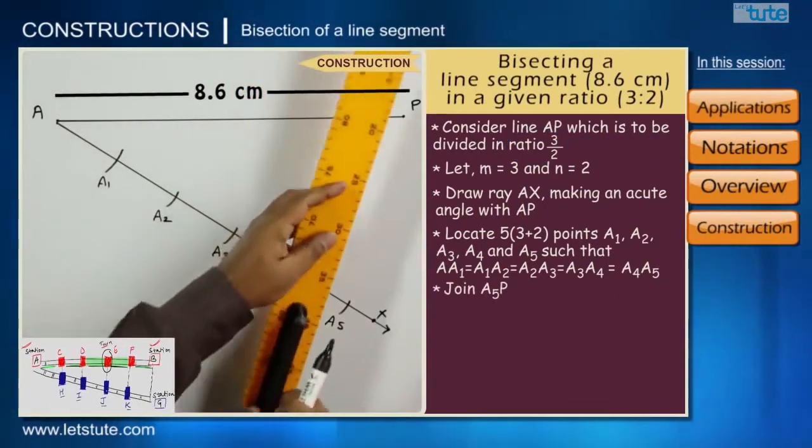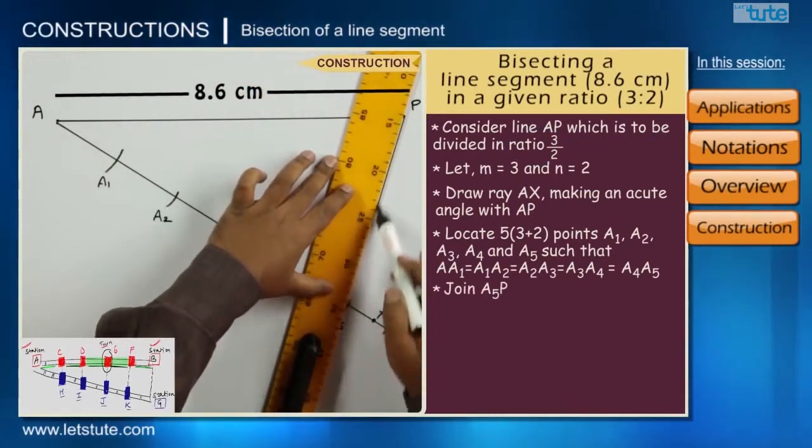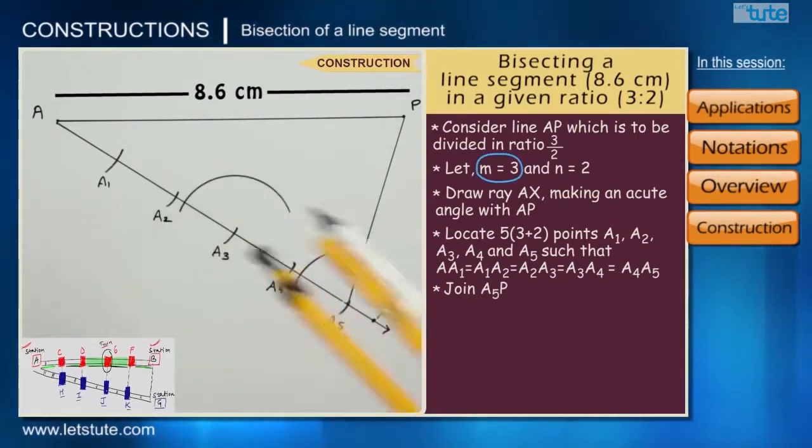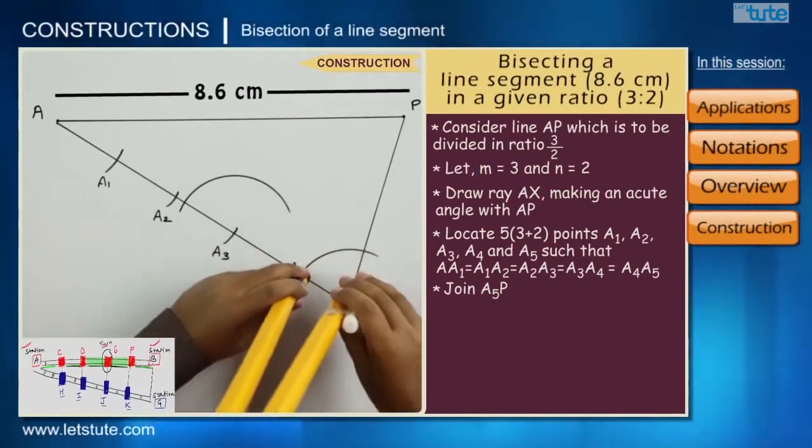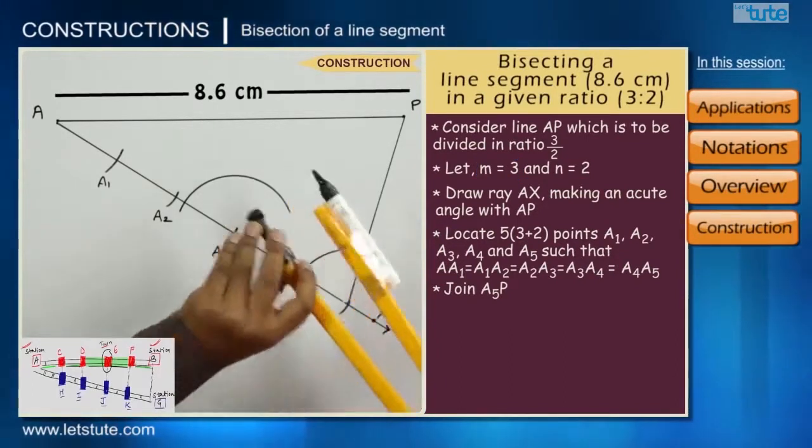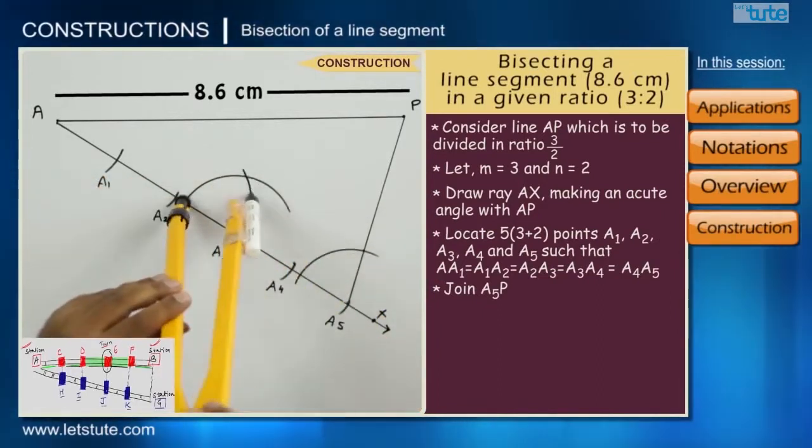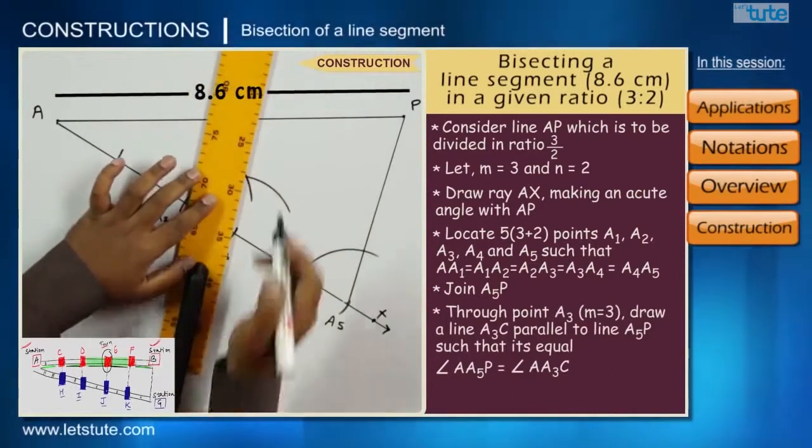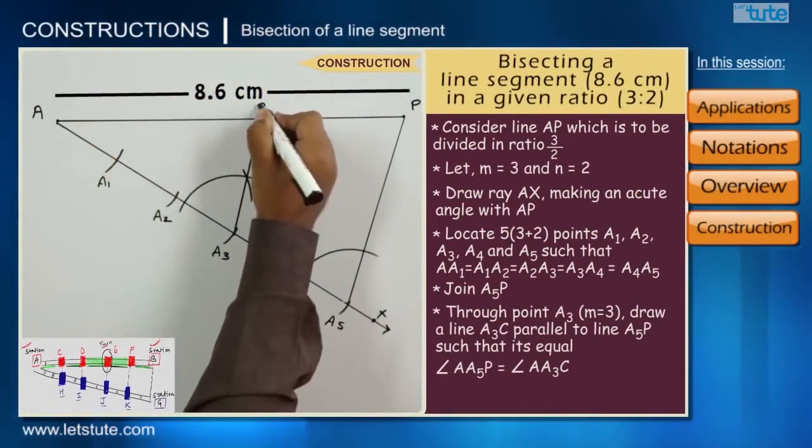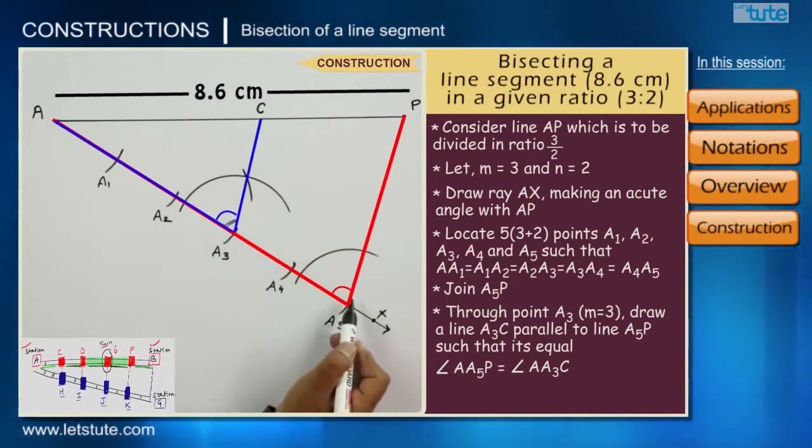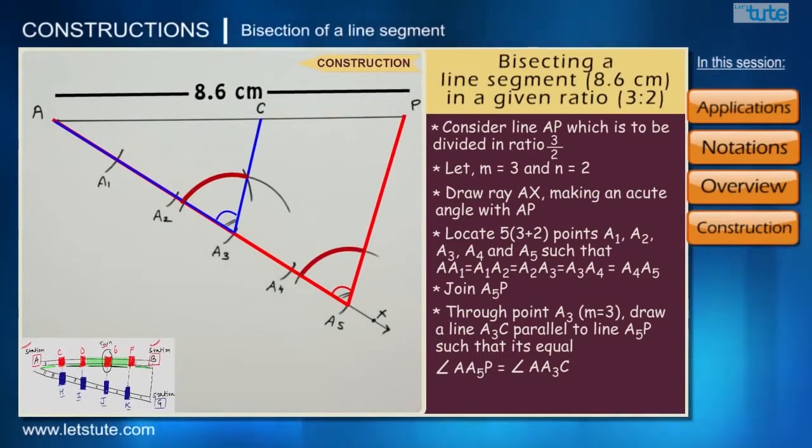With the help of a straight edge, join the points P and A5. Take the compass and draw an angle between ray AX and line segment A5P. Draw a similar angle from point A3. Now, measure this angle between AX and A5P with the compass, and with the same angle measure cut an arc over the angle that we drew from A3. Now draw another line segment A3C which will be parallel to A5P. Notice the angle AA3C and AA5P are equal.